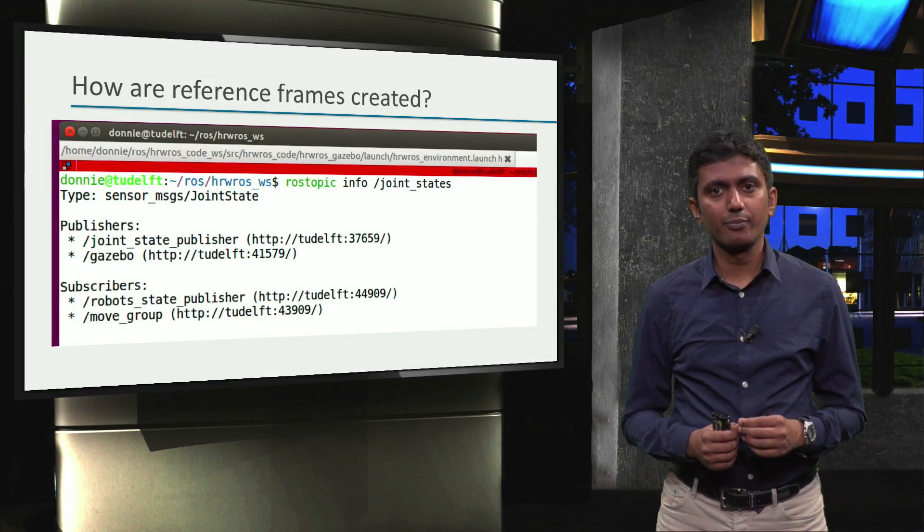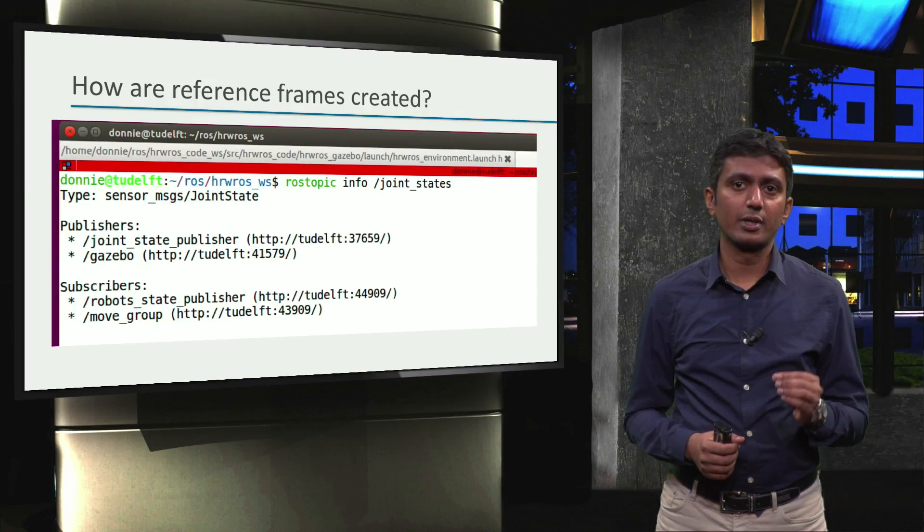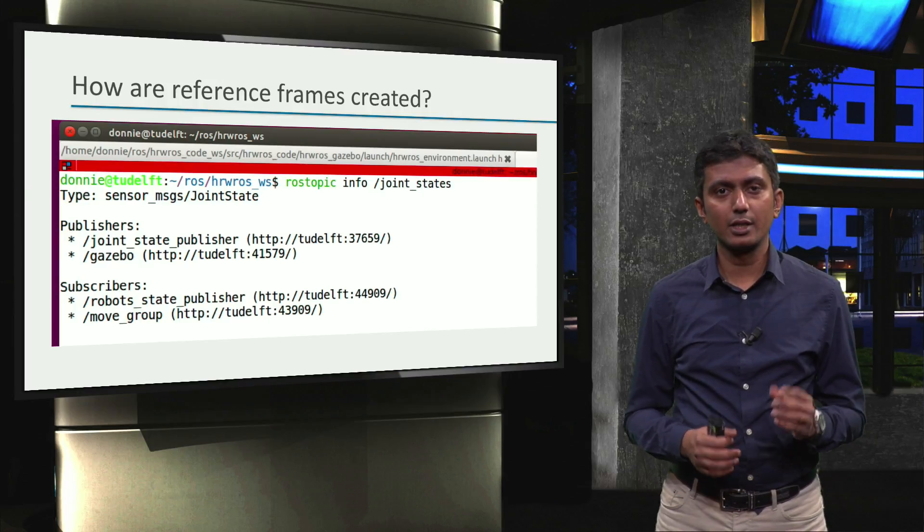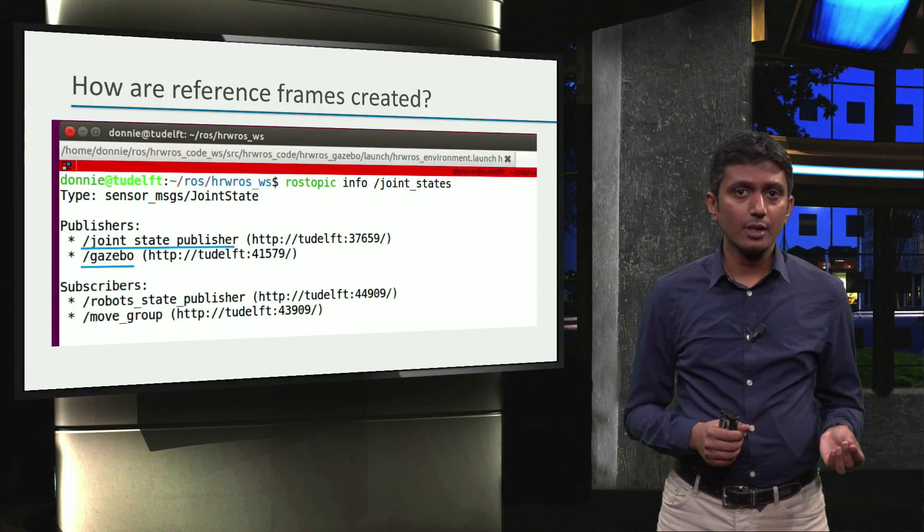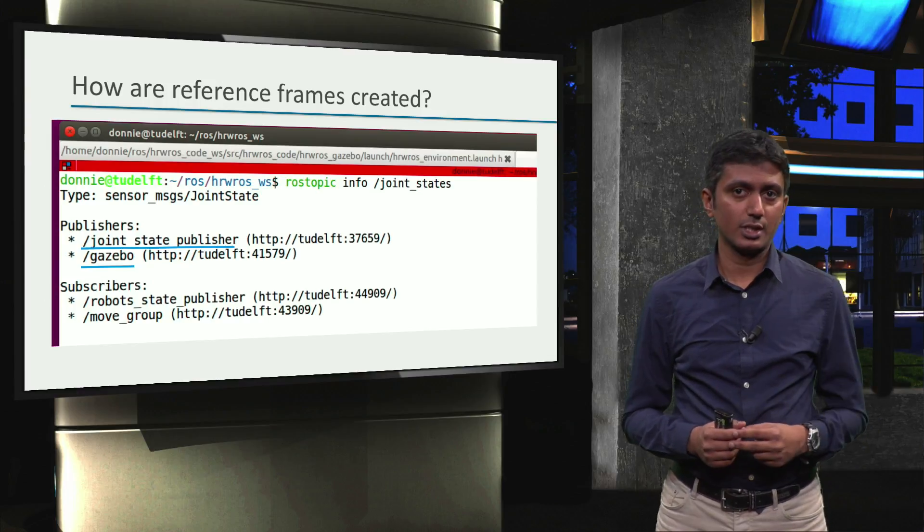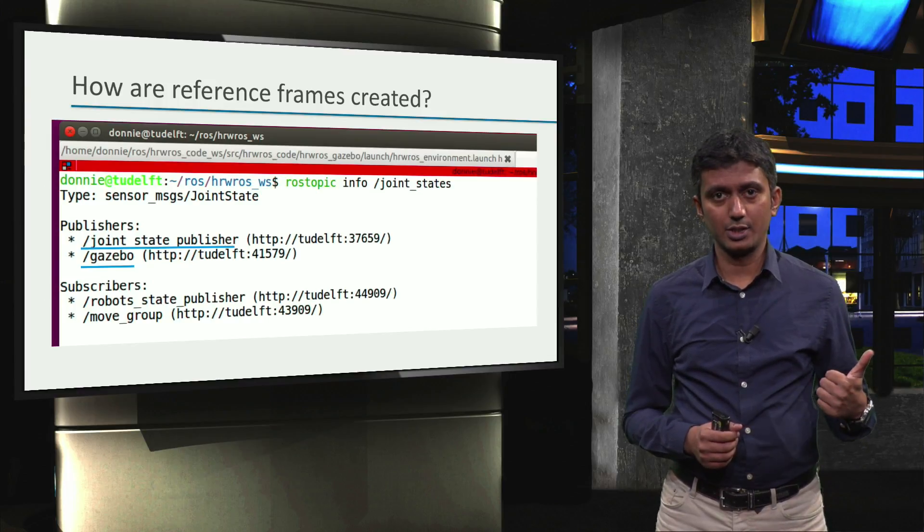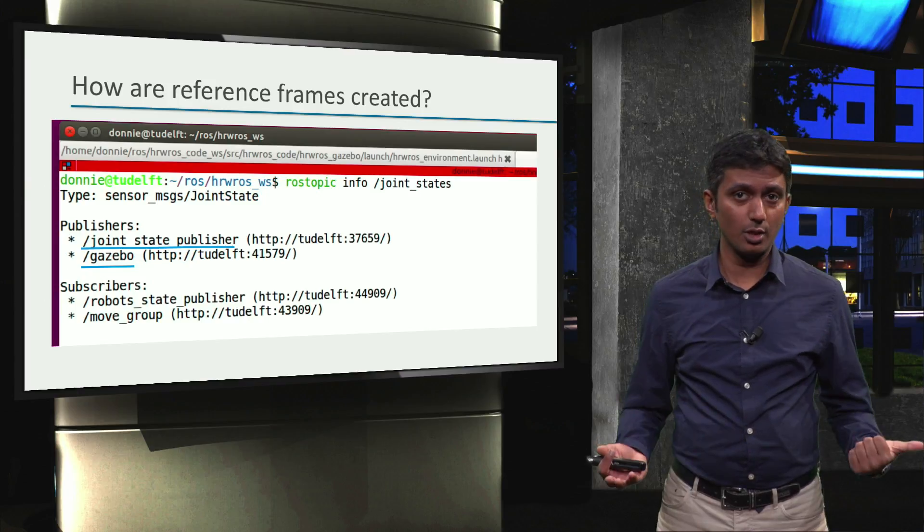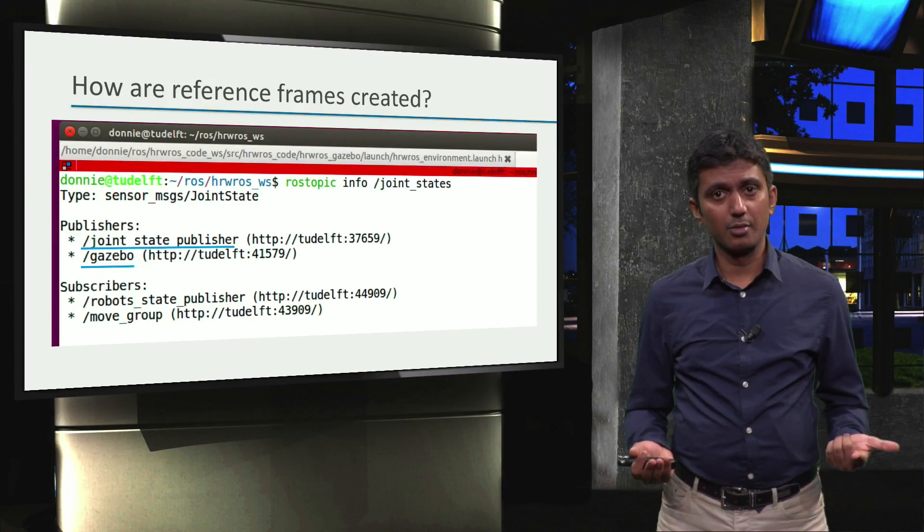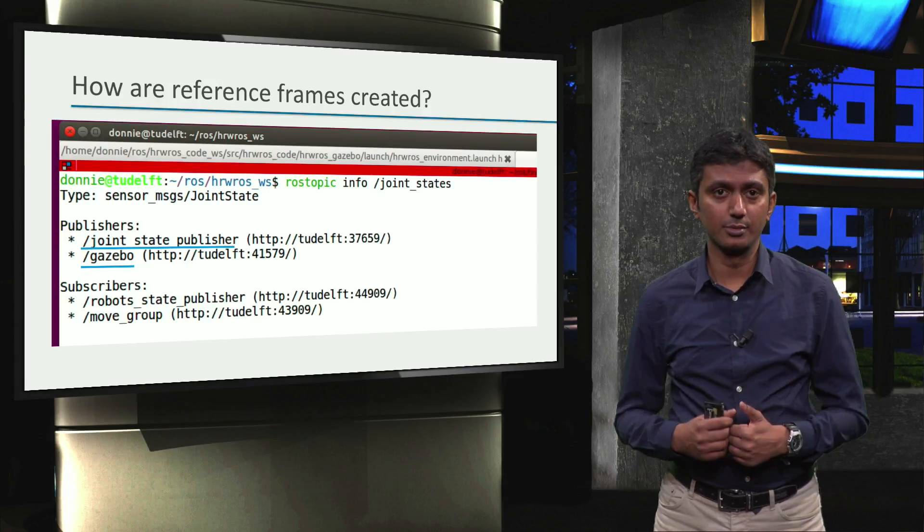Just as a quick check, let's use the rostopic info command to inspect the joint states topic. We can see that there are two publishers as expected: Gazebo publishing joint state information related to the turtlebot, and the joint state publisher publishing joint state information about the two robot arms.